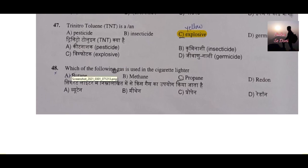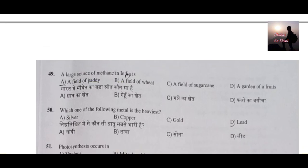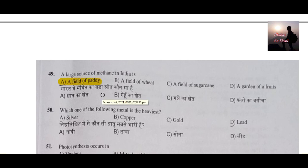Question number 48: Which of the following gas is used in a cigarette lighter? The answer is butane gas — remember that. Question number 49: The largest source of methane in India is what? It is paddy fields. In paddy fields, the organic content mixes into the mud, and after decomposition a large amount of methane is produced. So paddy fields are the largest source of methane in India.